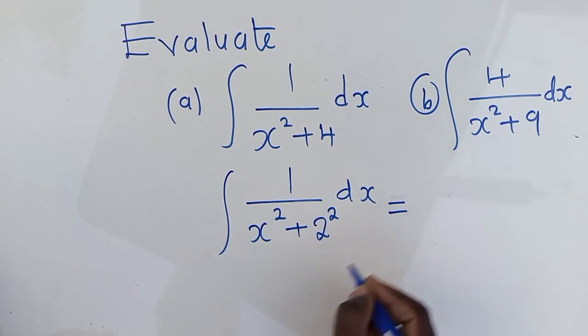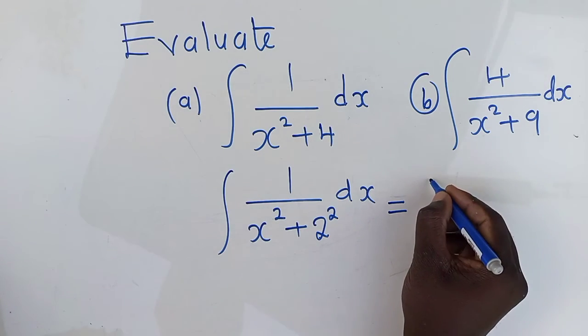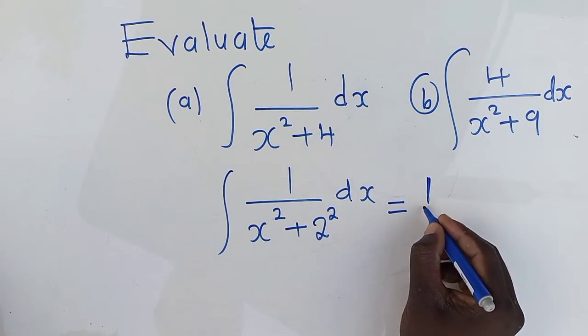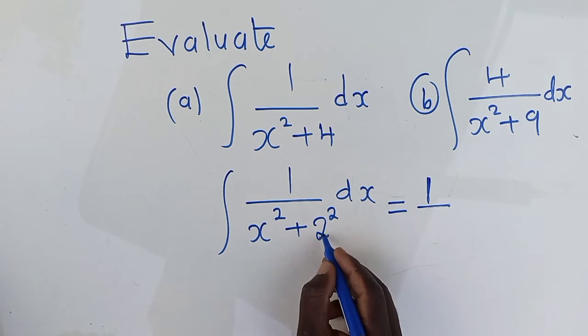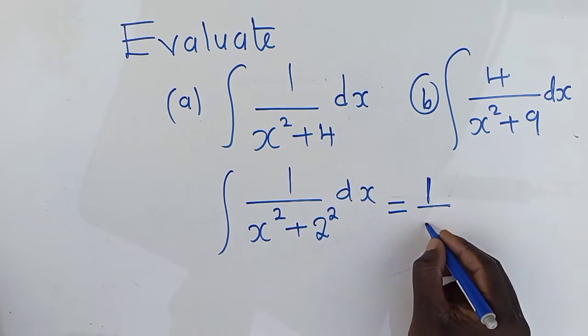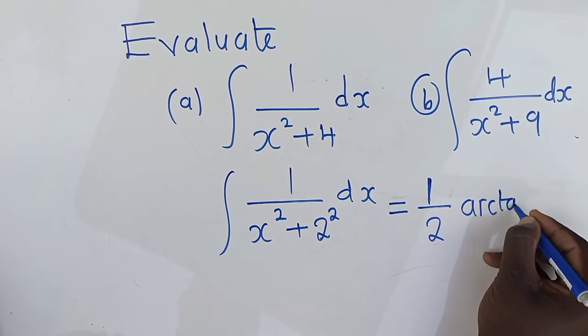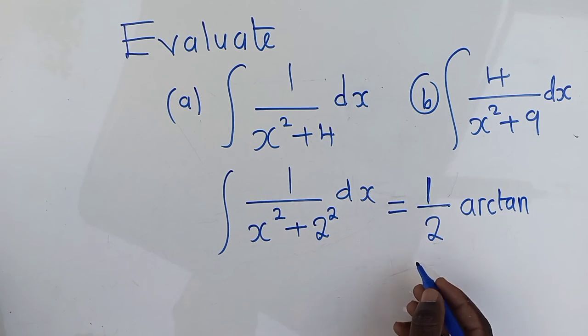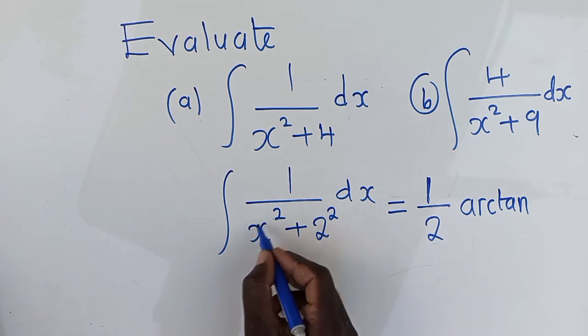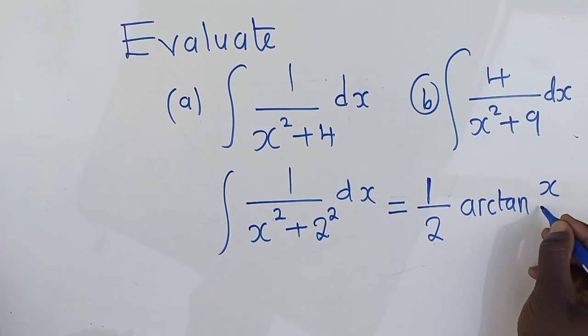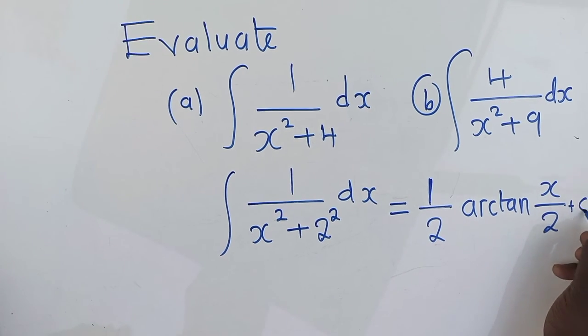So, it will be equal to—remember, we said we write a 1 over the constant, which is right here, the number. So, it's a 2, and then we say arc turn. Remember, this is how it looks like, arc turn. And then we get the variable, which is here, x over this 2, and then we say plus C.